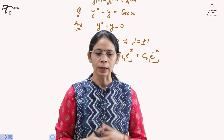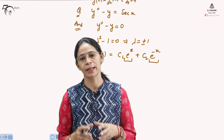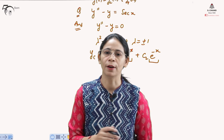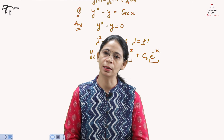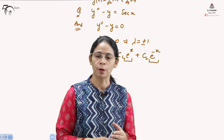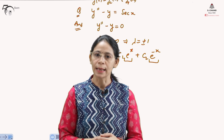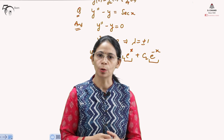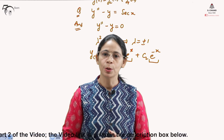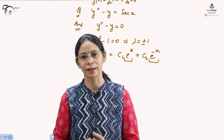We must remember a few key things about the method of variation of parameters. First, it is a method to find the particular integral, not the complementary function. Second, the prerequisite is that we must already know the complementary function. Third, it is applicable only to linear differential equations of second order. We will continue with the solution in the upcoming part of the video.